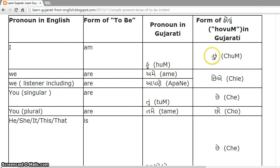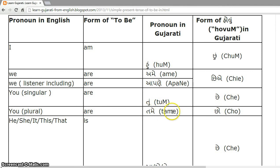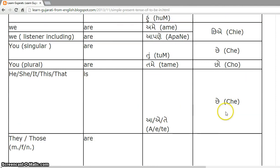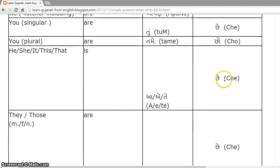HOHUN — form of HOHUN is CHHUN. For AME and APANE, form is CHHIE. For TUH, form is CHHE. TAME — CHHO. For A, A, TE — that is third person singular as well as plural — form is CHHE.